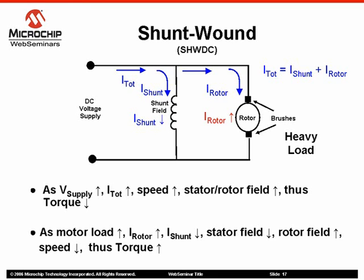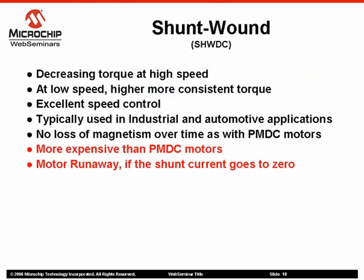As total current increases, motor speed will increase and motor torque will decrease. However, once you put a load on the motor, the rotor current will increase causing the rotor field to increase. If the rotor current increases, then the shunt current will decrease, causing the stator field to decrease. This will cause the motor speed to decrease and the motor torque will increase. Shunt wound brush DC motors have the performance characteristics of decreasing torque at high speeds and a high but more consistent torque at low speeds.